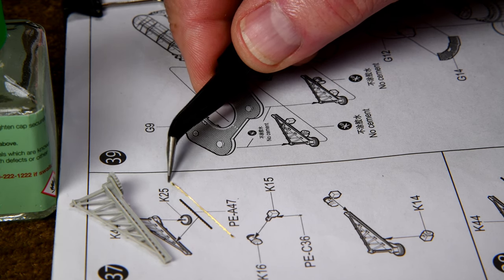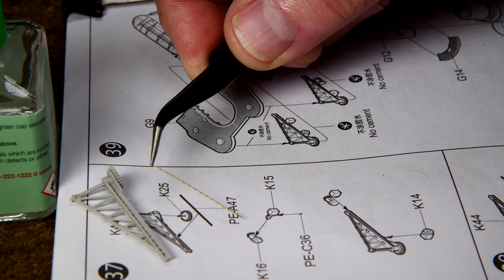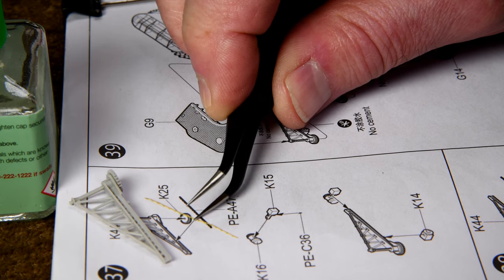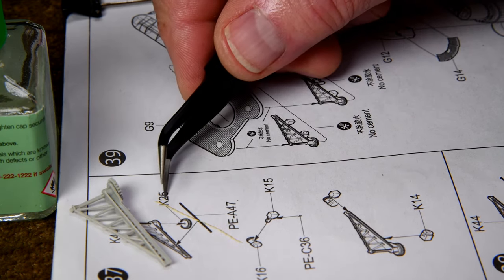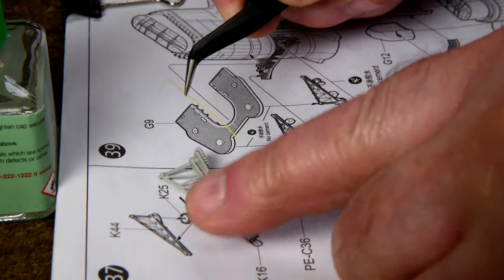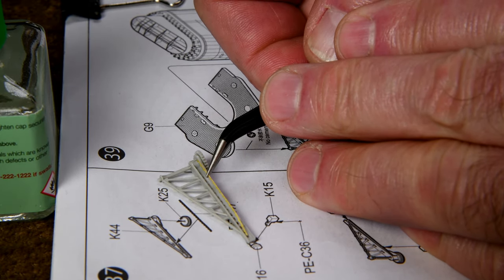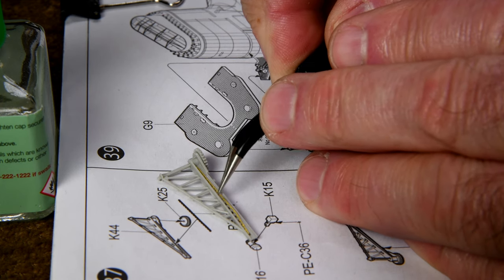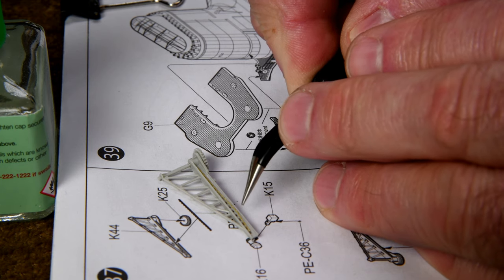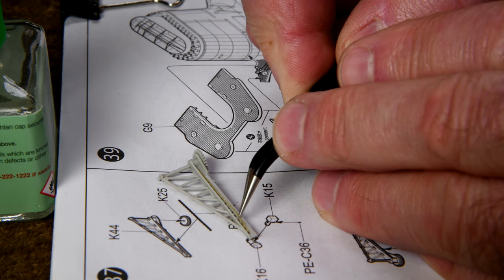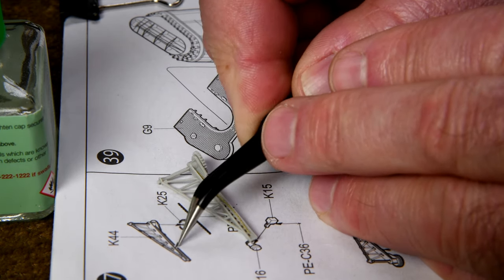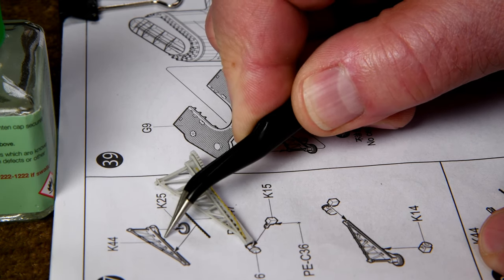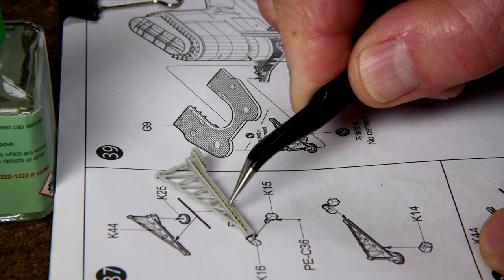Okay, now this is supposed to go - I'm noticing that this side that's up right now is kind of shiny and this side is textured. I would imagine that the detailed side has to be out. Now I think this has to go something like this. I'm assuming it goes in there. It's not real clear here.